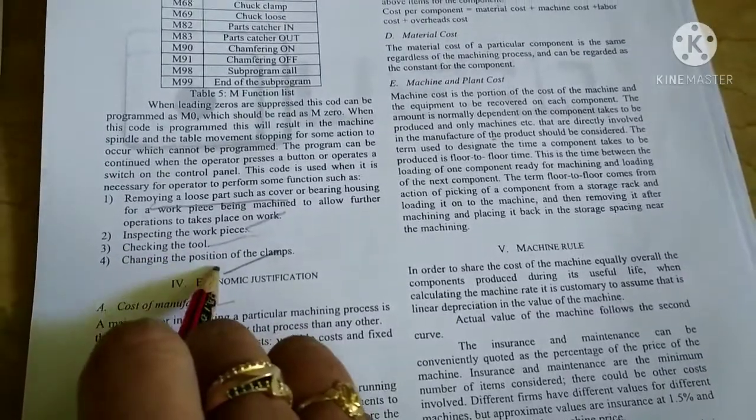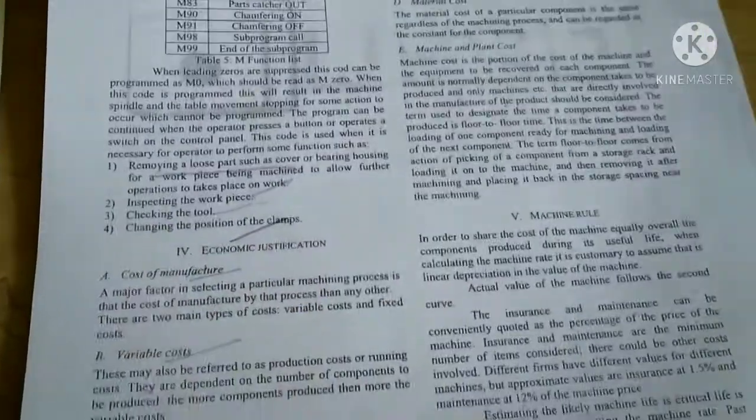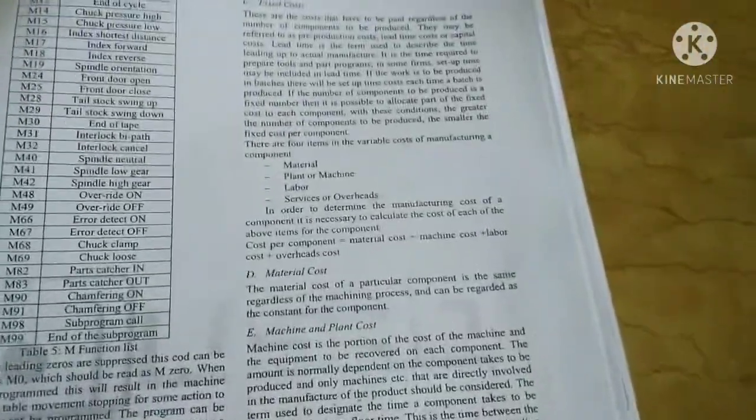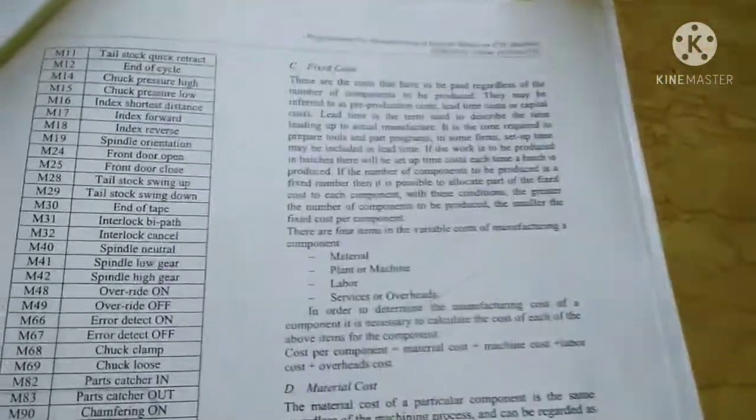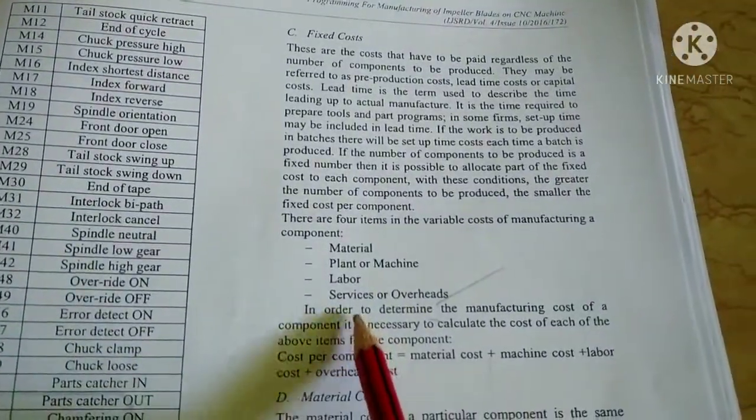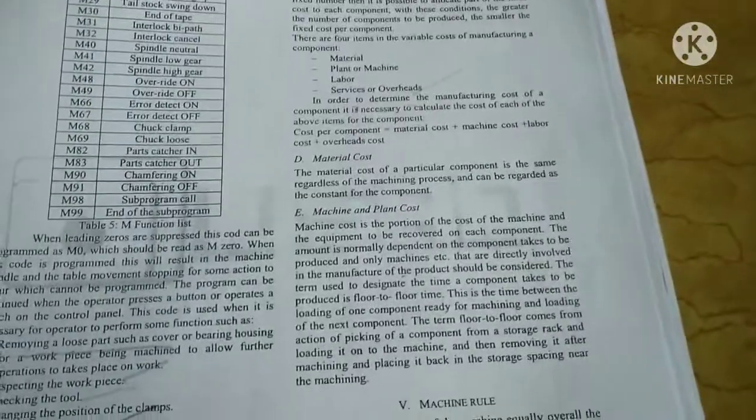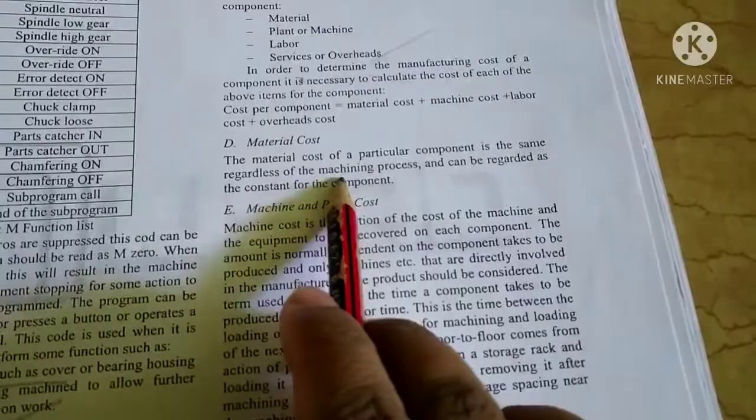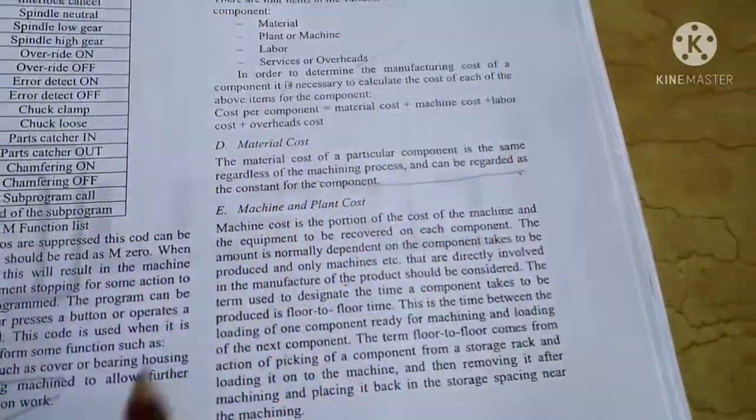Next, see here fixed cost and variable cost. Fixed cost means material, labor, plant, and services. This is the fixed cost.